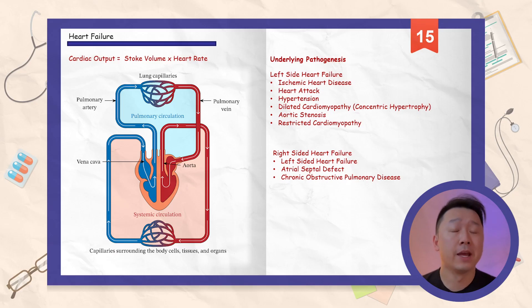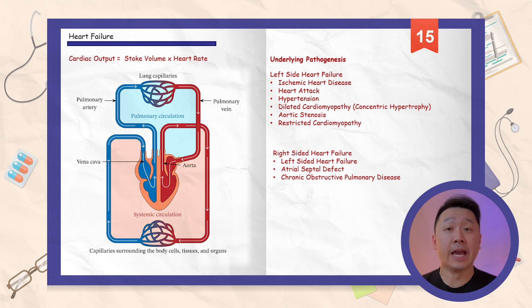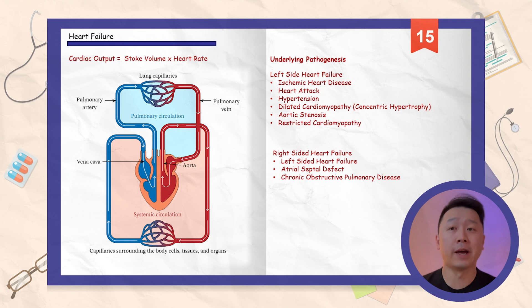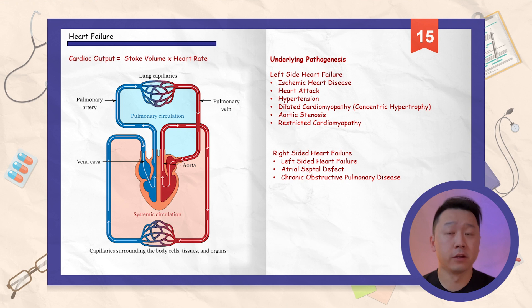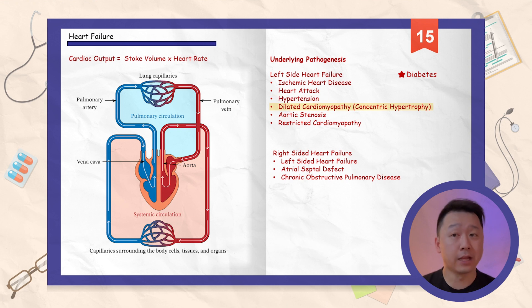To better understand the underlying pathogenesis of heart failure, it can be broken down into right-sided and left-sided components. Regardless of which side, the end result affects cardiac output through systole or diastole. Left-sided heart failure causes include diabetes, ischemic heart disease, heart attack, hypertension, dilated cardiomyopathy, concentric hypertrophy, aortic stenosis, and restrictive cardiomyopathy.